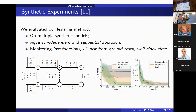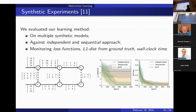We tested this approach first on synthetic experiments — models defined on paper where we know the optimal solution. We measured performance in terms of how small the learned abstraction error is, how far we are from the ground-truth abstraction, and computational wall-clock time. We compared our joint approach to benchmarks that solve the commutative diagrams either sequentially or independently.